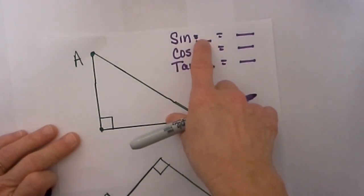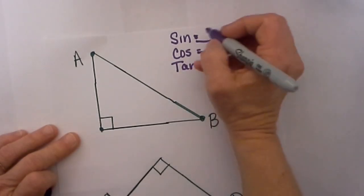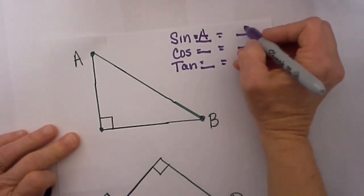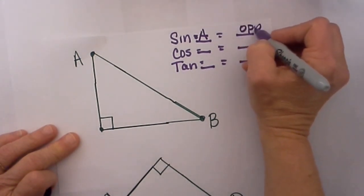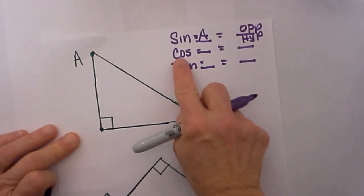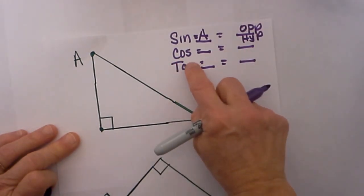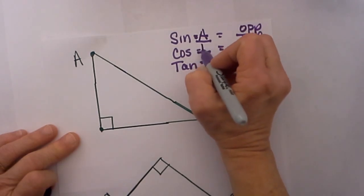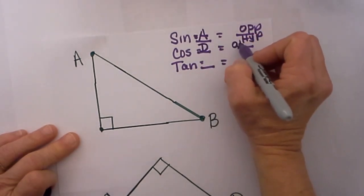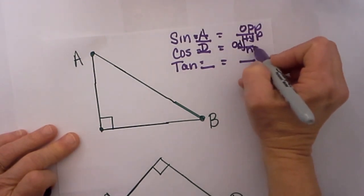The sine of an angle is equal to the opposite side over the hypotenuse of a right triangle. Then the cosine—I am going to take the cosine of angle D—and the cosine would be the adjacent side over the hypotenuse.